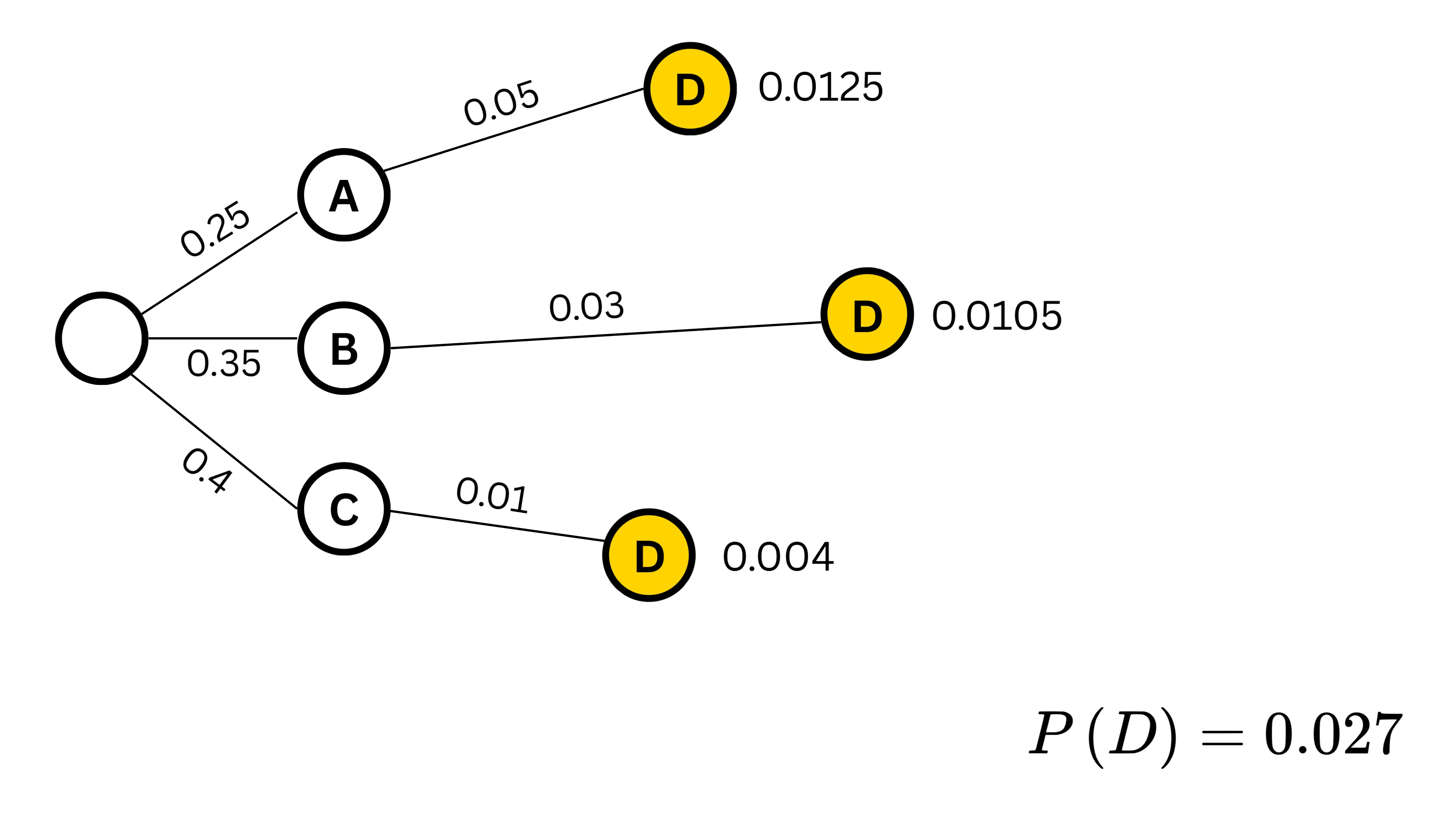Adding these gives the total defective probability of 2.7%. Finally, Bayes' theorem tells us that the chance that the defective came from C is the path of C and defective probability divided by the total defective probability. That is 0.4 divided by 2.7, which is about 14.8%.